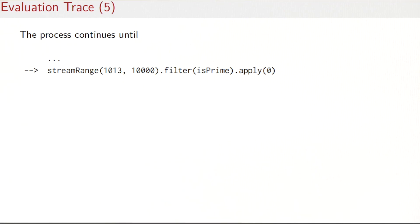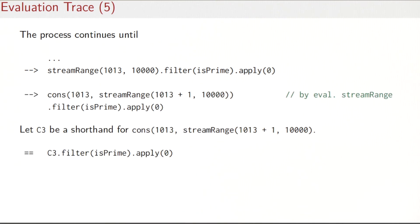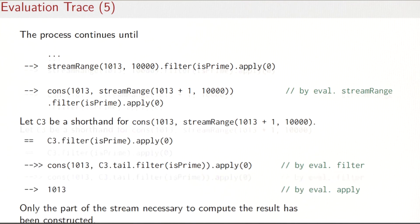And now the computation is about to wrap up. So the streamRange function would expand as usual. We make it a shorthand—call it C3 for this expression, so we have C3.filter(isPrime).apply(0). We apply the filter function—that would say, well, 1013 is a prime number, so let's include it in the list. We have the tail expression here, apply(0) of that. We evaluate the apply function, and that would pull out the first element, 1013, and that's the result of the computation.